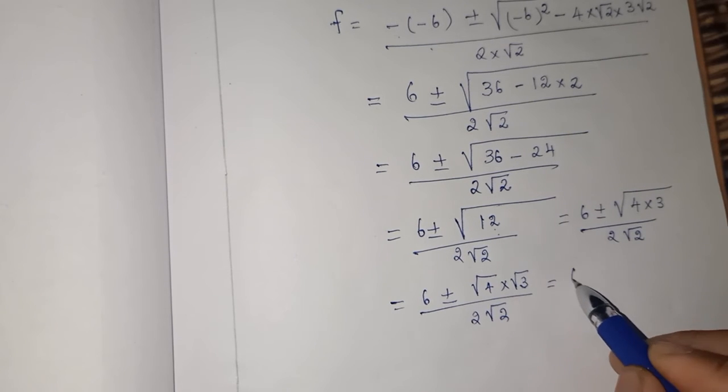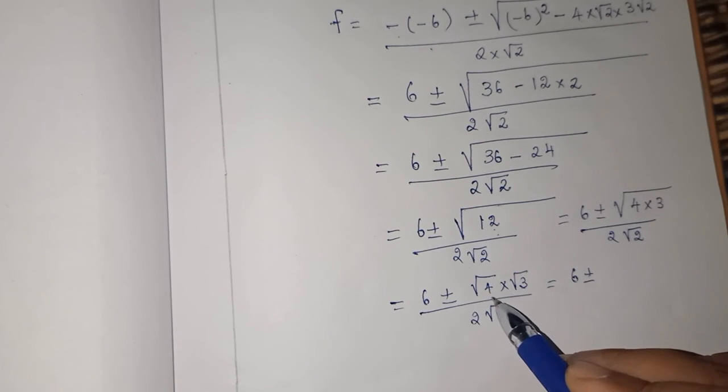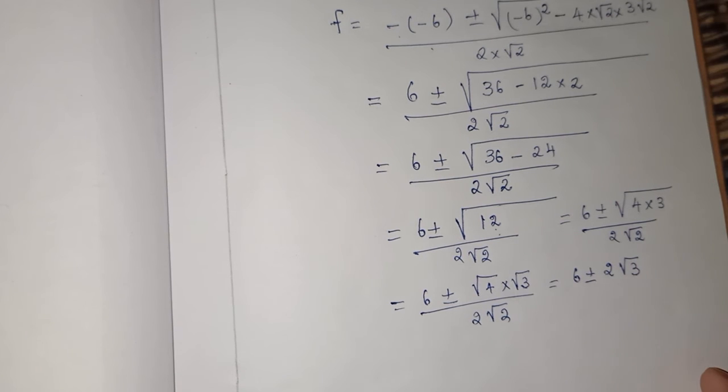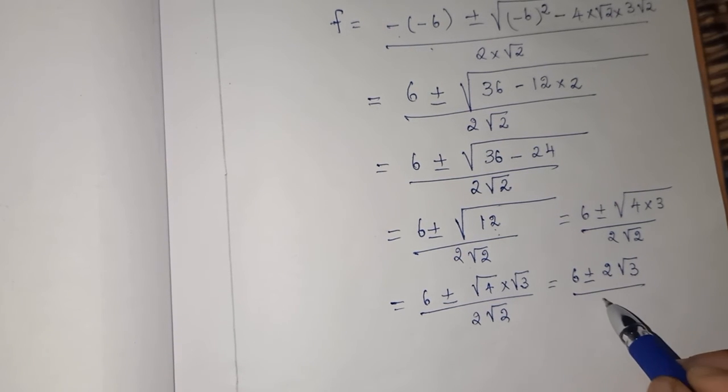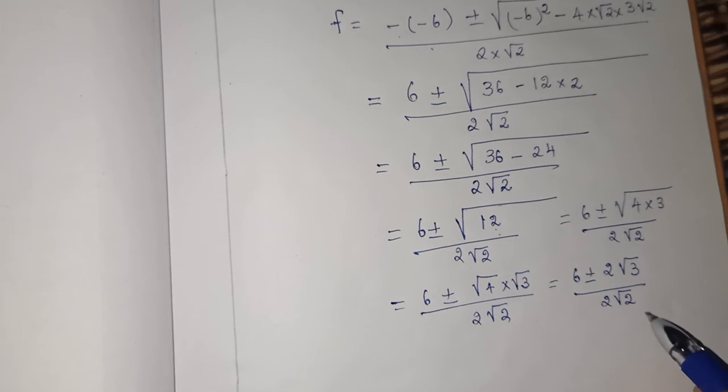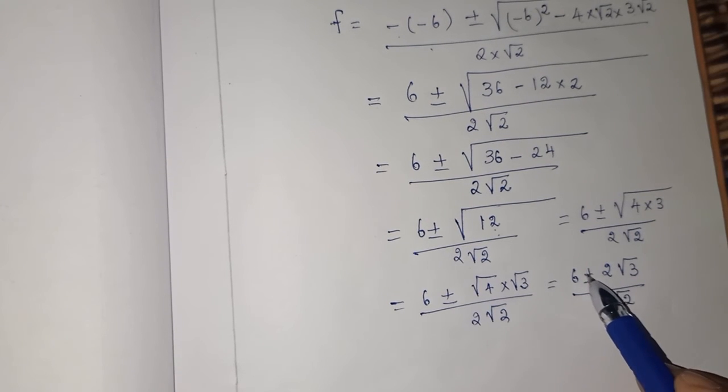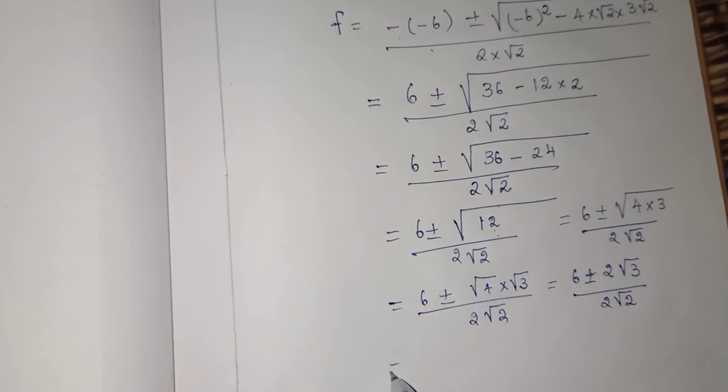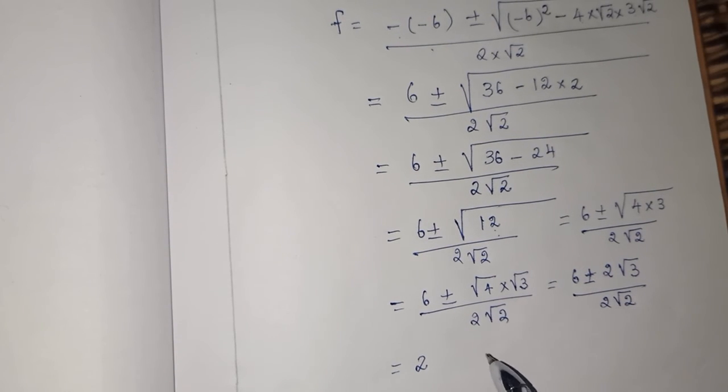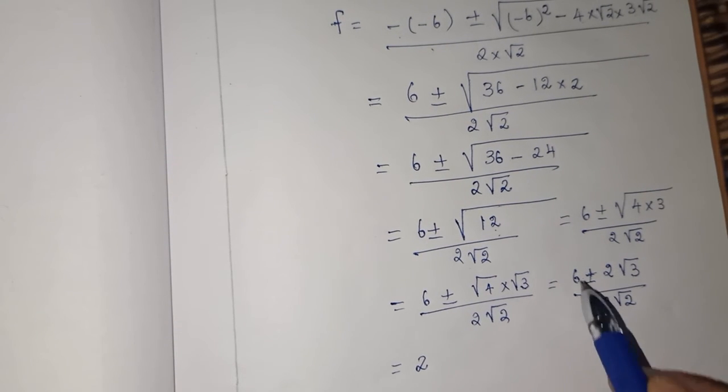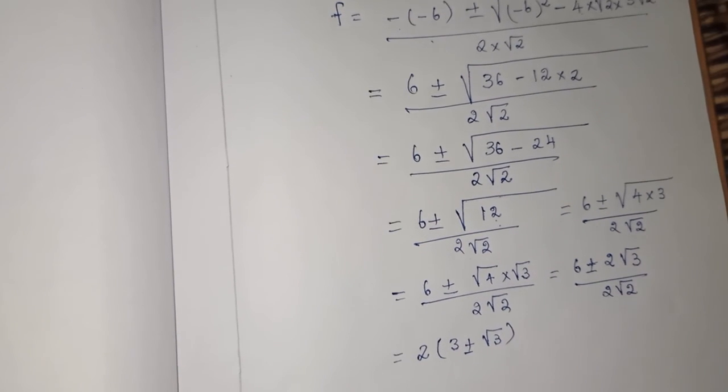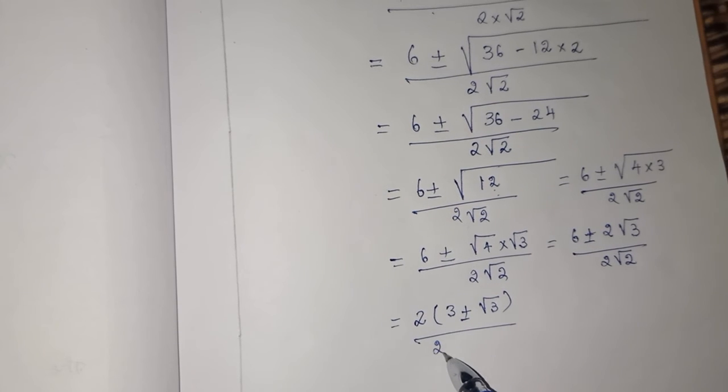What will happen? 6 ± √4 is 2, so 2 × √3. √3 we cannot do anything, it is an irrational number. By 2√2. By seeing this you can see clearly there is a common factor: 6, 2, 2 here. We can take 2 as common outside. What will come inside? First the numerator: 3 ± √3 divided by 2 × √2.